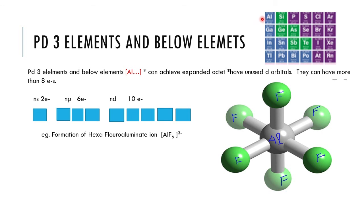Period 3 and below elements can achieve an expanded octet because they have d orbitals, allowing more than 8 electrons. They do not need to strictly satisfy the octet rule — there are exceptions. These are the introductory concepts of the boron family; in the next video, we will go deeper into boron family chemistry.